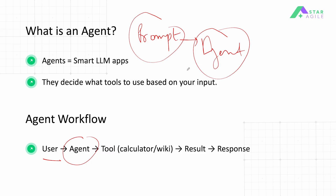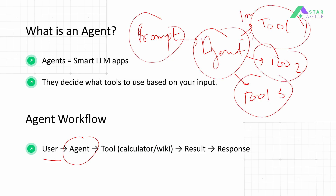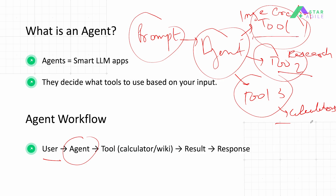Is the user asking for a certain research to be performed? Or are they asking us to create an image? Or are they asking us to evaluate a complex mathematical expression? Depending upon what the prompt is asking, the agent is going to call the respective tool. There are different tools which will be defined, and each tool will perform a single activity — one tool for image creation, a second for research, a third for calculations.